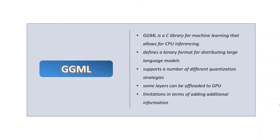First, let's look at a new type of quantization technique: GGML. GGML is a C library for machine learning that allows CPU inferencing. The 'GG' refers to the initials of its originator, Georgi Gerganov. It defines a binary format for distributing large language models, using quantization — a technique that allows LLMs to run on consumer hardware with effective CPU inferencing.